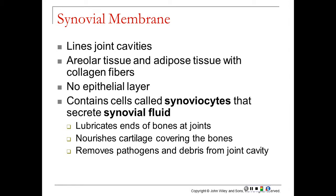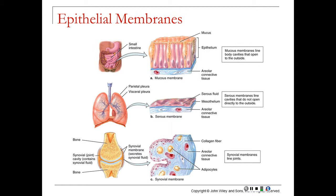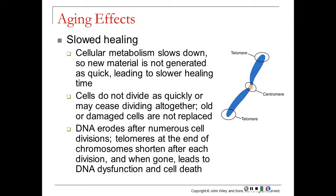Synoviocytes are special cells in synovial membranes that secrete synovial fluid to lubricate the ends of bones, nourish cartilage, and remove pathogens and debris from the joint cavity. A summary diagram shows all epithelial membrane types: the mucous membrane with its epithelial and areolar connective tissue layers; the serous pleural membrane with visceral and parietal layers and serous fluid secreted by the mesothelium; and the synovial membrane lining joint cavities, secreting fluid to lubricate and protect bone ends.